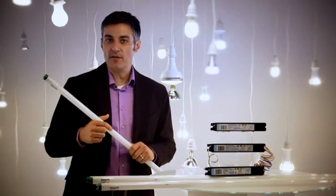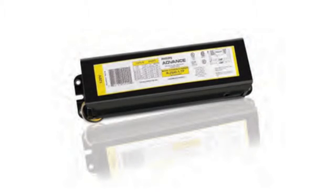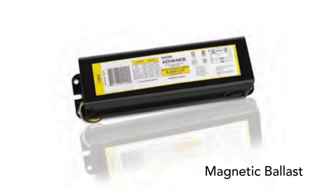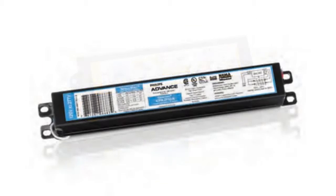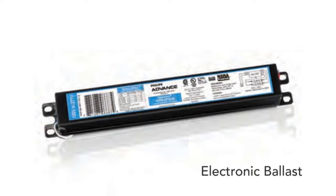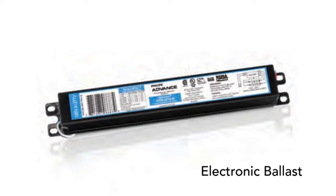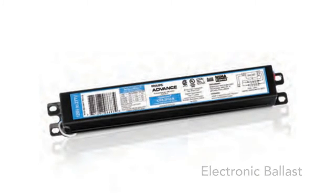There are two types of ballasts for residential fluorescent bulbs. The oldest in use is the magnetic ballast, almost all of which were phased out by Department of Energy legislation in 2010. The lighter, quieter, and more energy-efficient electronic ballasts are the smart replacement for magnetic ballasts.